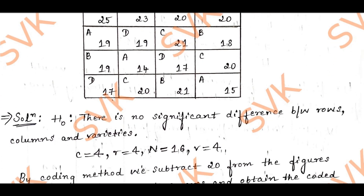Moving on to the solution, first we need to define the null hypothesis. I have defined null hypothesis H0 as: there is no significant difference between rows, columns, and varieties. Here we need to find the F ratio test according to rows, columns, and varieties — showing whether there is or isn't a difference between them.